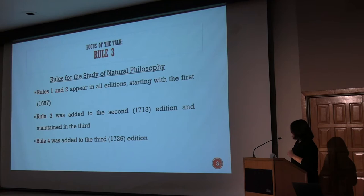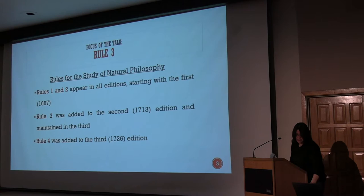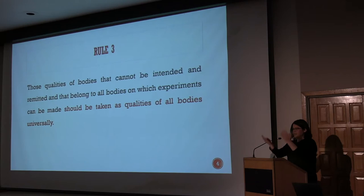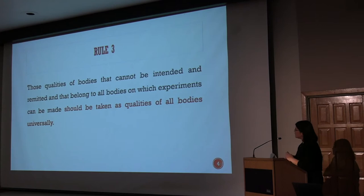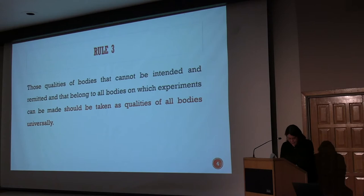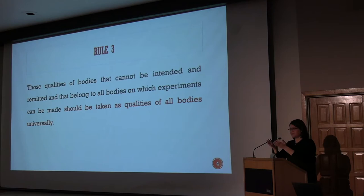Rule 4 was added to the third edition. Now, what does Rule 3 say? Those qualities of bodies that cannot be intended and remitted and that belong to all bodies on which experiments can be made should be taken as qualities of all bodies universally. Sometimes this is called Newton's inductive rule because of the scope of the generalization. Sometimes it's called his transductive rule because the generalization goes all the way down to the smallest parts. I'm just going to call it a universalizing rule to be generic here.